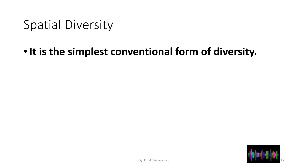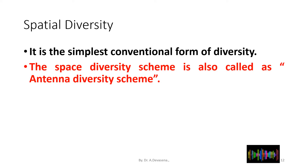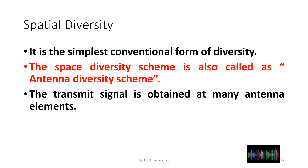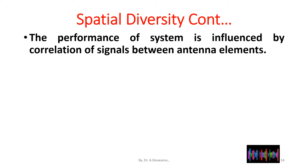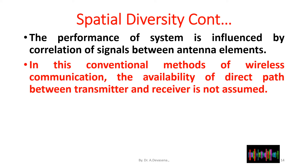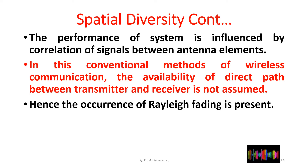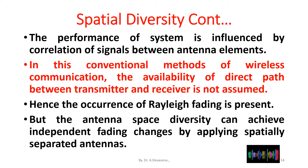Spatial diversity is the simplest conventional form of diversity. The space diversity scheme is also called the antenna diversity scheme. The transmitted signal is obtained at many antenna elements. Here is a block diagram of space diversity representation. The performance of the system is influenced by the correlation of signals between antenna elements. In conventional wireless communication, the availability of a direct path between transmitter and receiver is not assumed, hence Rayleigh fading is present. Antenna space diversity can achieve independent fading changes by applying spatially separated antennas.